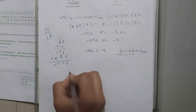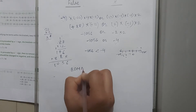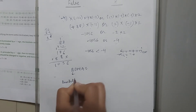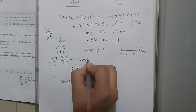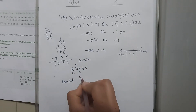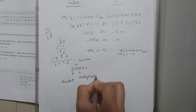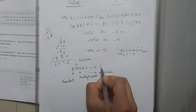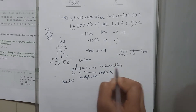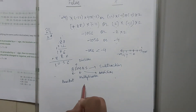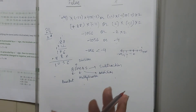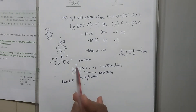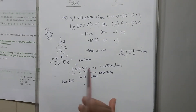Next, there is a rule called BODMAS — B, D, M, A, S. B stands for Bracket. D stands for Division. M stands for Multiplication. A stands for Addition. And S stands for Subtraction. According to this rule, if we have a complicated statement and we have to solve it, we use this rule: firstly solve the bracket, then division, then multiplication, then addition, and then subtraction.